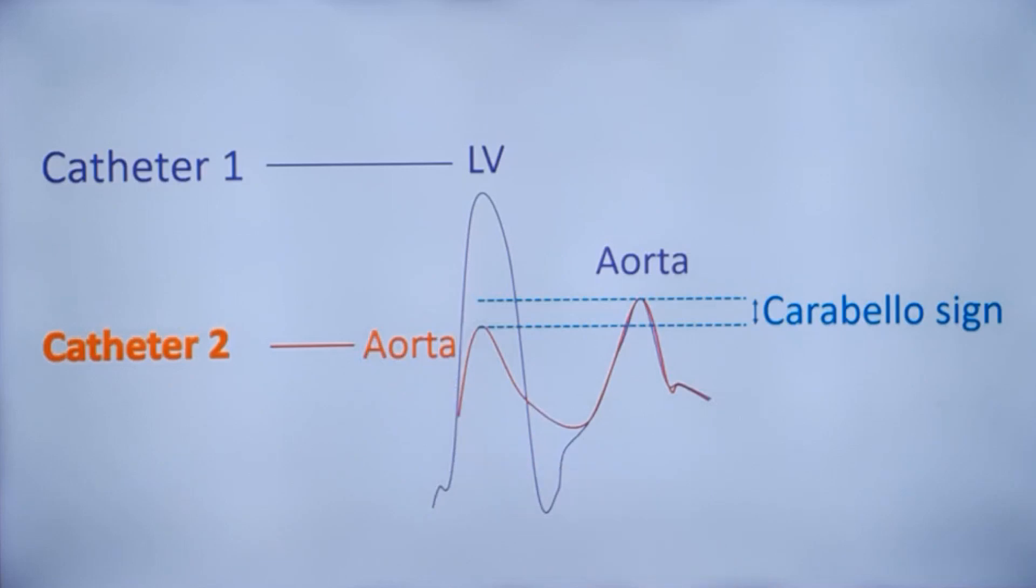Another should be monitoring aortic pressure separately. Or else you could use the femoral catheter side arm, the femoral sheath side arm for monitoring a surrogate of aortic pressure.